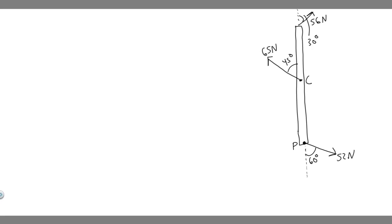In this problem, we're told to determine the net torque on a 2 meter long uniform beam shown in this figure. We need to calculate about point A, which is point C, and point B, which is point P. The formula for torque is torque equals the radius times the force times the sine of theta.